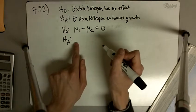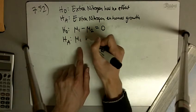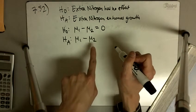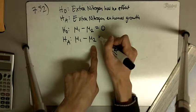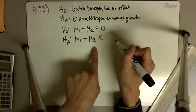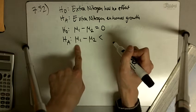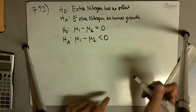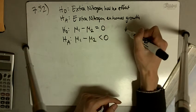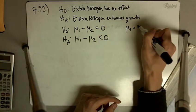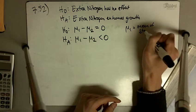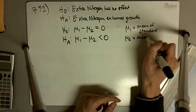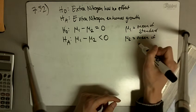The alternative, mu1 will be the standard group, and if mu2 is for the nitrogen group, the true mean of the nitrogen group, then we're expecting the nitrogen group to be heavier than the non-nitrogen group, so we're expecting this to be less than zero. So mu1 is mean of standard, and mu2 will be mean of nitrogen enhanced group.